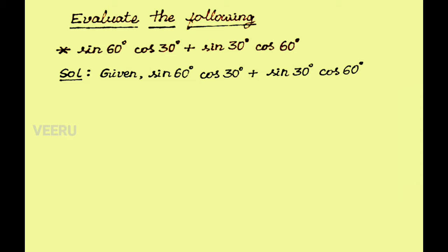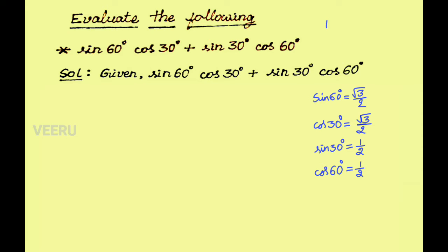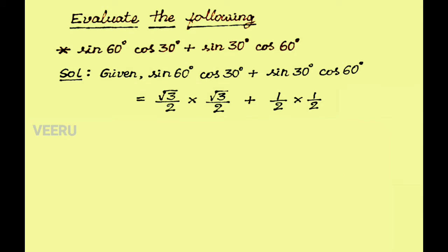We know that sin 60 degree is root 3 by 2, cos 30 degree is root 3 by 2, sin 30 degree is 1 by 2, and cos 60 degree is 1 by 2. Substituting all these values, we get root 3 by 2 into root 3 by 2 plus 1 by 2 into 1 by 2.